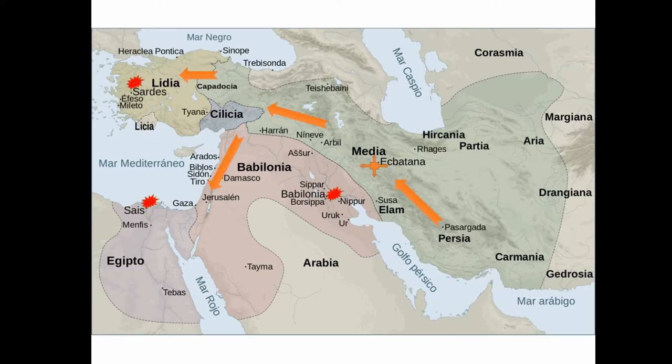Later on, in the 6th century BC, Croesus, the last king of Lydia, would have made an alliance with Amasis II and the last king of Babylon, Nabonidus, to defeat the Medians. This alliance destabilized the whole region and created the conditions for the Persians to conquer Lydia, Babylon, and Egypt itself.